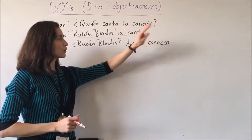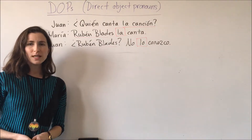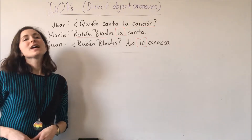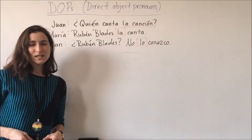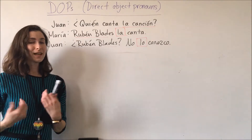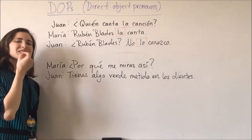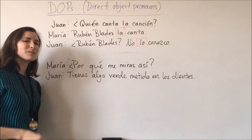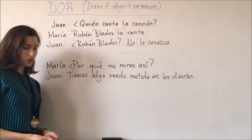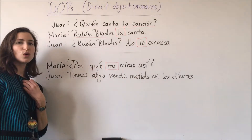Remember, a pronoun replaces — it substitutes a noun — so you do not have to repeat the noun. Instead of saying no conozco a Rubén Blades, we have no lo conozco. As I mentioned previously, a person, a place, or a thing — any noun you have — can be a direct object. Another example would be ¿Por qué me miras así? ¿Tienes algo verde metido en los dientes? The direct object pronoun used here is me, referring to a mí.